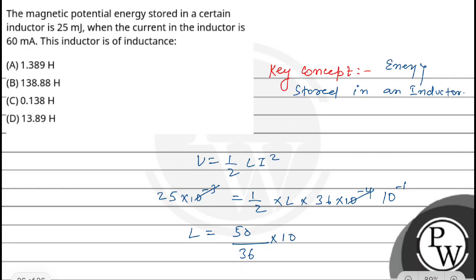× 10, which gives us L = 13.89 henry. So our final answer is option D. Hope you understood it well, all the best!